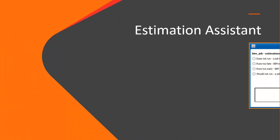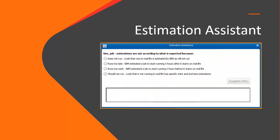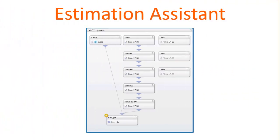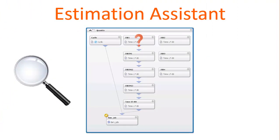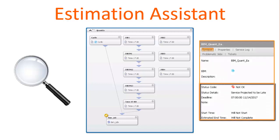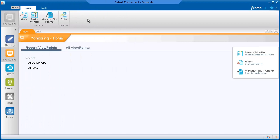Let's begin with the estimation assistant, which is available in Control-M version 9. The estimation assistant is a troubleshooting aid that helps you identify the first job that causes a problem in a BIM service that results in the service not completing. For example, when a job in the service is expected not to run and you want to locate the problematic job. To use the estimation assistant, in the monitoring domain, you open the service monitor.